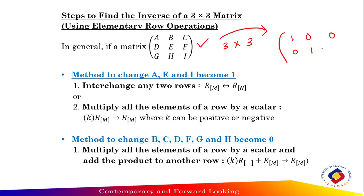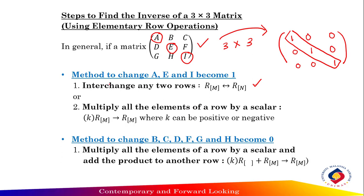Step two, apply row operations until the left side is reduced to the identity matrix, giving identity matrix augmented B. The resulting matrix B is the inverse of A. To change A to identity, first change the diagonal elements A, E, I to one using either row interchange or scalar multiplication. Then change the off-diagonal elements B, C, D, F, G, H to zero using the third method: multiply a row by a scalar and add to another row.